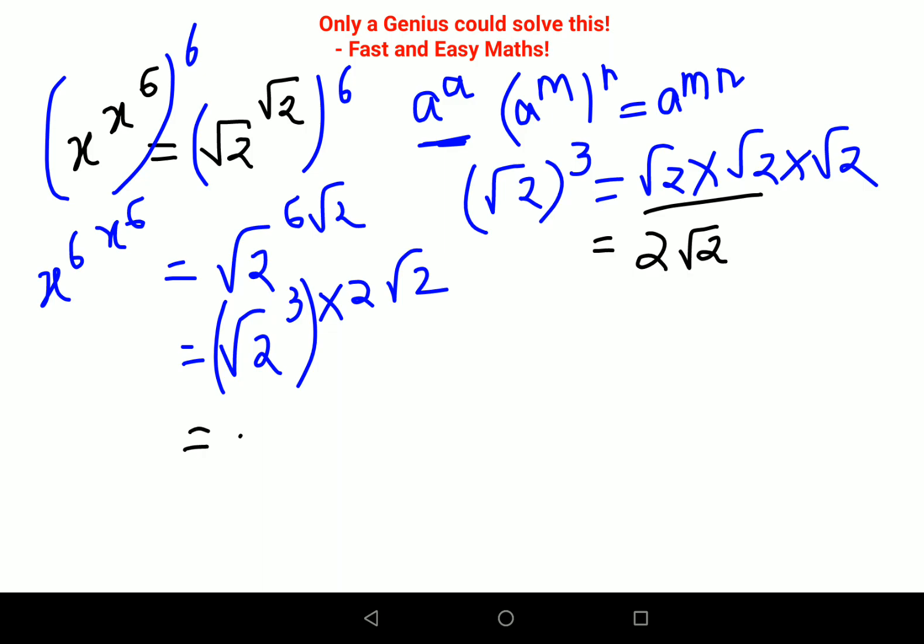Your final answer now changes to (2√2)^(2√2). In your LHS, you still have x^6 raised to x^6. Therefore, I can say that x^6 equals 2√2. Now, 2√2 can be written as 2^1 × 2^(1/2). Bases are the same, so I can add the indices to get 2^(3/2), because 1 + 1/2 gets you 3/2.